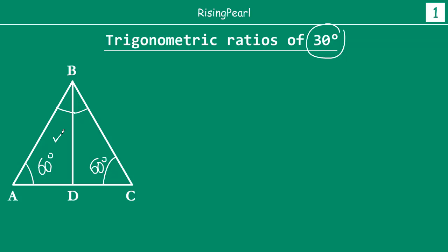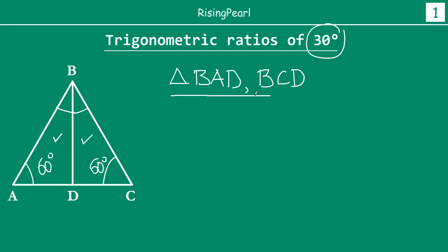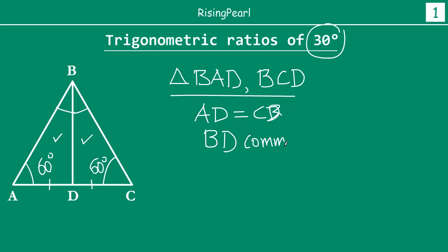So at this point, if you look at these two triangles — triangle BAD and triangle BCD — you will notice that AD is equal to CD because D is the midpoint, so these two sides are equal. The side BD is common to both triangles. And also AB is equal to BC because triangle ABC is an equilateral triangle.